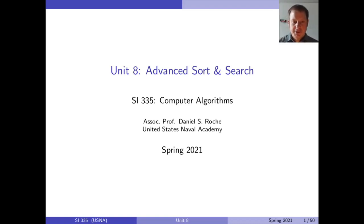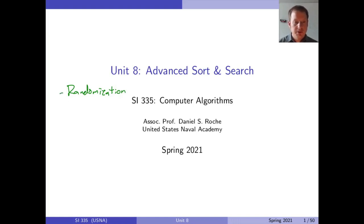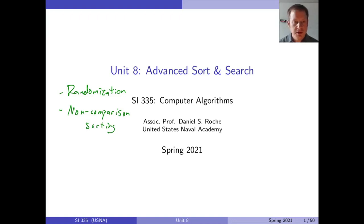Hi, everyone. Let's start our last unit on advanced sort and search. This is really just some other ideas that are not maybe as crucial or integral, but are really kind of interesting and fun to think about for our last unit of the class. The main things we're going to be talking about are randomization, and there's a family of algorithms starting with quickselect and then quicksort that use randomization in cool ways. And then thinking about non-comparison sorting and breaking the lower bounds that we've seen before.